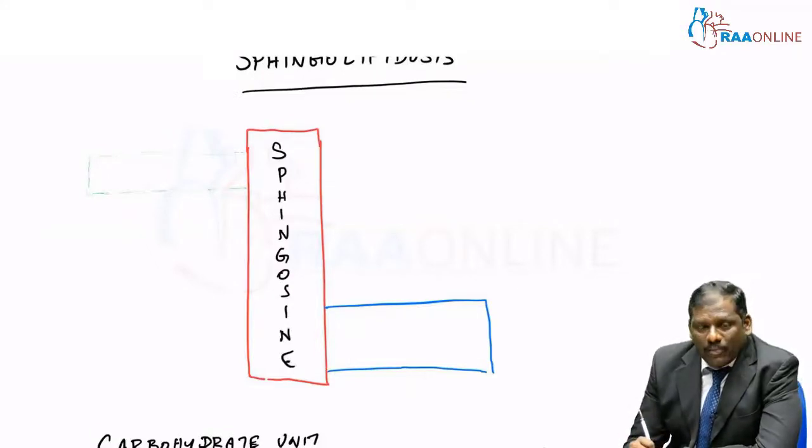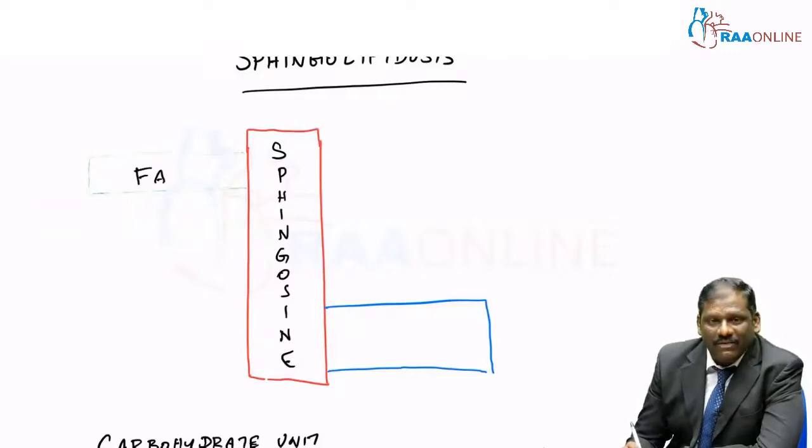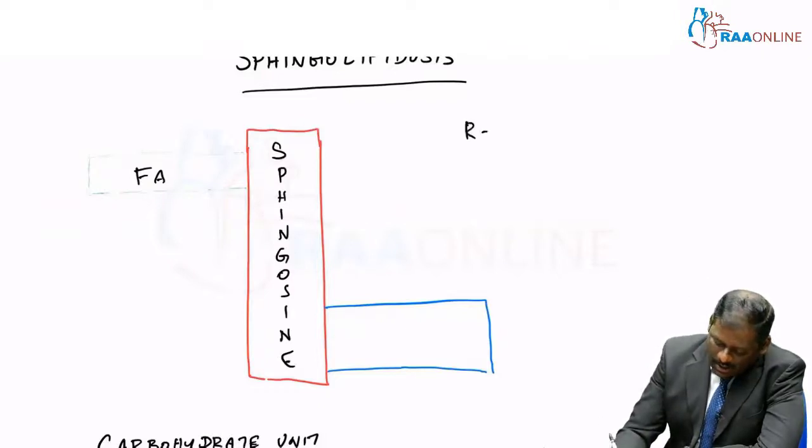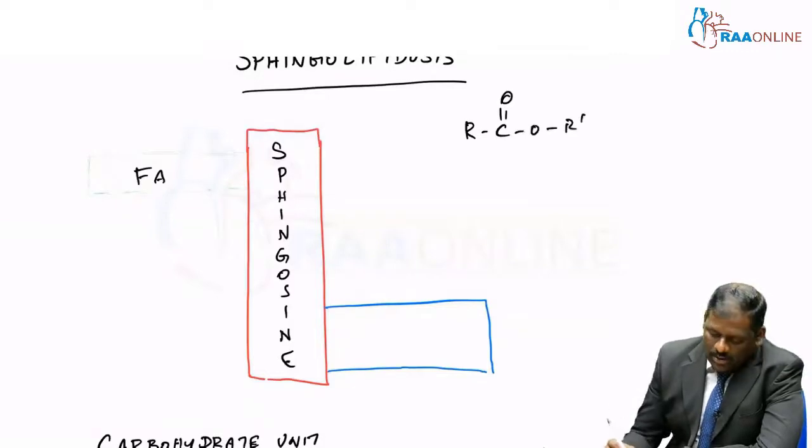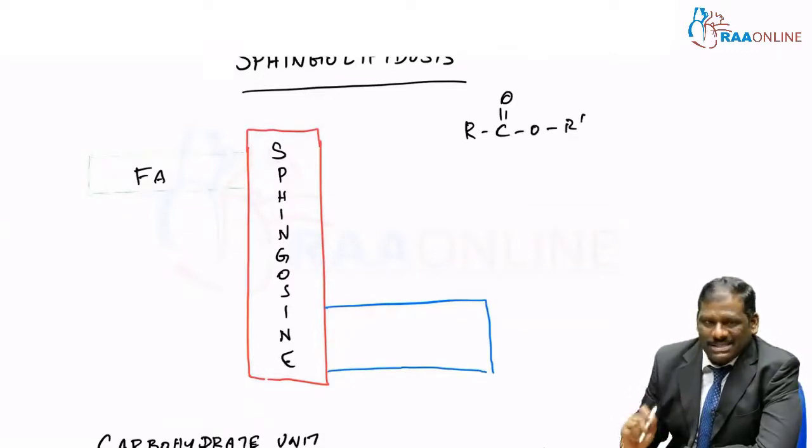To this backbone alcohol, a fatty acyl-CoA or fatty acid will get attached through ester linkage. Ester linkage is R-C double bond O-O-R dash. This is ester linkage: alcohol and an acid combining. So this is called as sphingolipid.